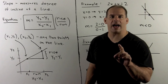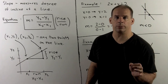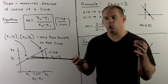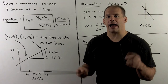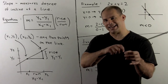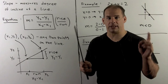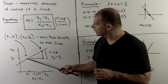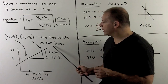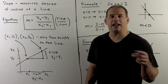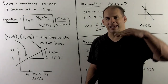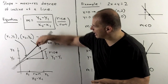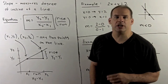We consider a special feature of lines called the slope. Note we have two ways to construct lines: I could pick any two points in the plane, connect the dots, extend, and we have a line. Or I could pick any point in the plane and draw a line through that point, but to specify the line I need to tell you how much we incline through the point. That measure of inclination is what we call the slope.